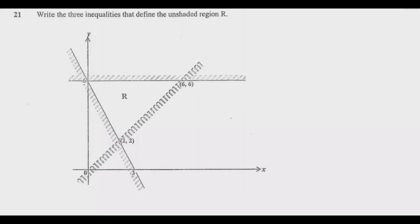Question 21 asks us to write the three inequalities that define the unshaded region. There are only two things to keep in mind: look at the line — is it a solid line or a dotted line? If it's a dotted line, use strictly greater than or strictly less than. If it's a solid line, use greater than or equal to, or less than or equal to.